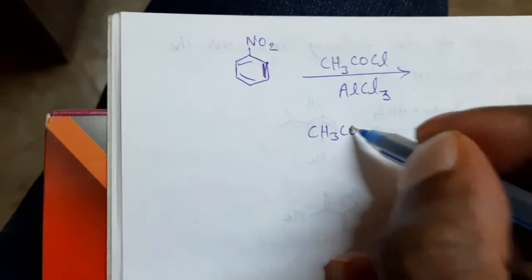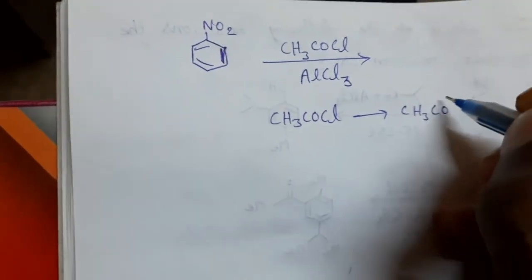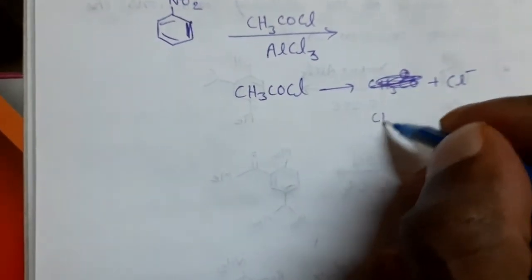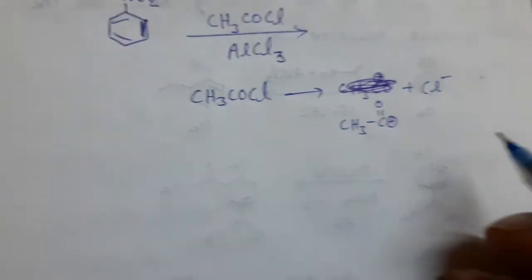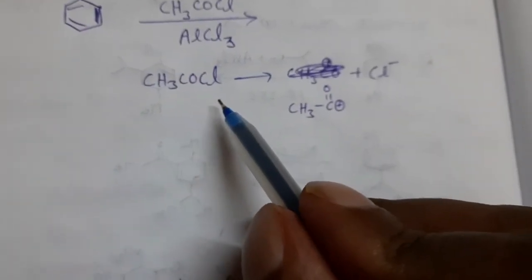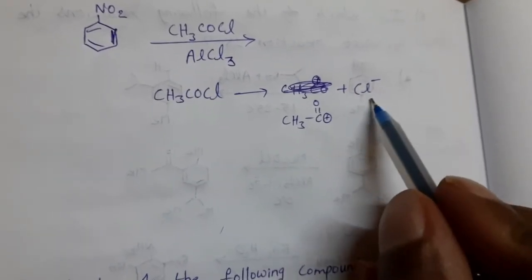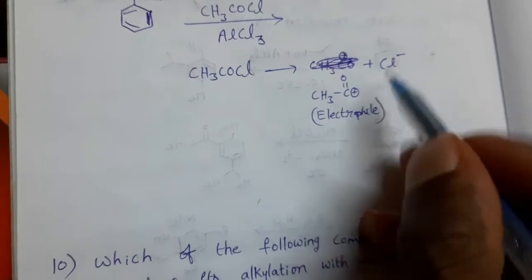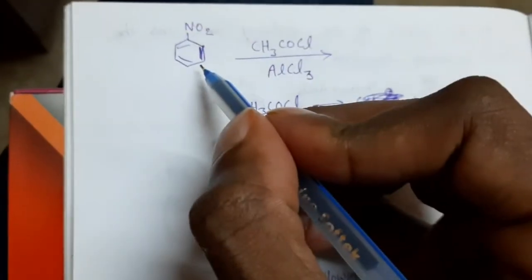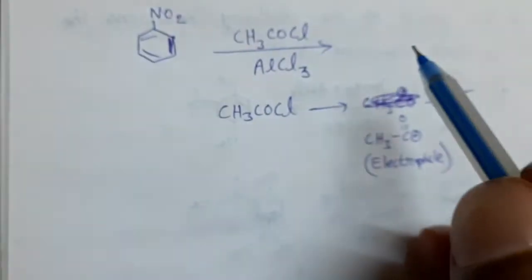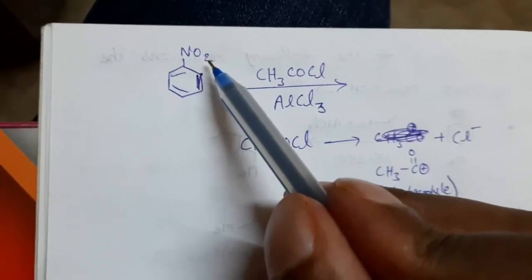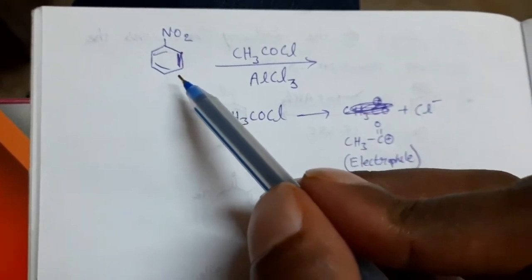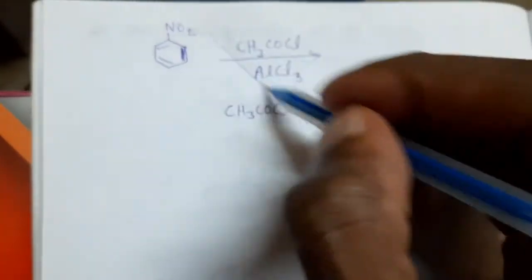CH3COCl undergoes ionization to form CH3CO+ and Cl−. So the carbon atom carries a positive charge — acetyl chloride ionizes to form CH3CO+ and Cl−. This is the electrophile, an electron-attracting group. For the substitution of this electrophile, we need the carbon atom to have negative charge — that is, high electron density. But NO2 is an electron-withdrawing group; it decreases electron density from the benzene ring, deactivating it towards electrophilic substitution. That is why this reaction does not take place.